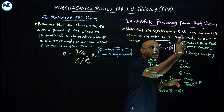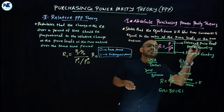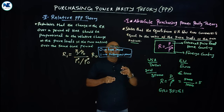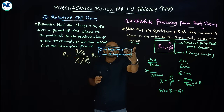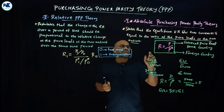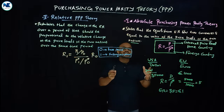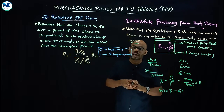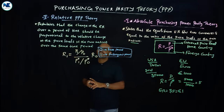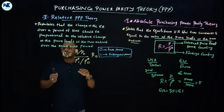Absolute purchasing power parity theory states that the equilibrium exchange rate between two currencies is equal to the ratio of the price levels in the two nations, based on the internal purchasing power of the home and foreign currency. However, changes in the exchange rate — appreciation or depreciation — are not explained by absolute purchasing power parity theory. That is explained by the second version: relative purchasing power parity theory.